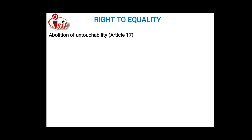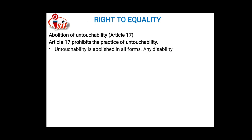Article number 17 is the abolition of untouchability. It prohibits the practice of untouchability. Untouchability is abolished in all forms, and any disabilities arising out of untouchability are made an offense.